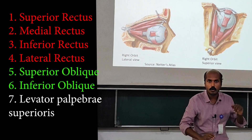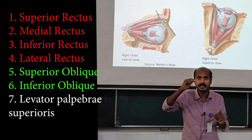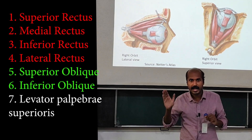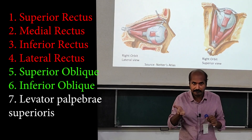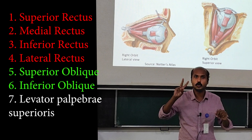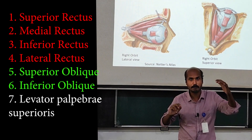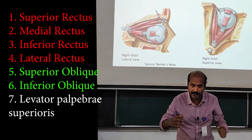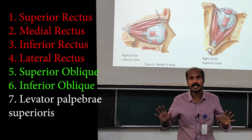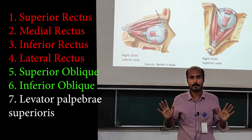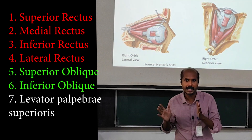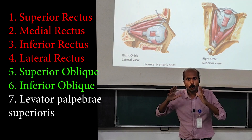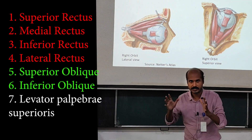The four rectus muscles are the superior rectus, medial rectus, lateral rectus, and inferior rectus. Then you have two obliques: the superior oblique and the inferior oblique. The seventh muscle is the levator palpebrae superioris, also called LPS. Now we will go to the orientation of these muscles.